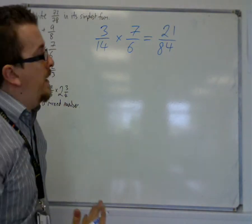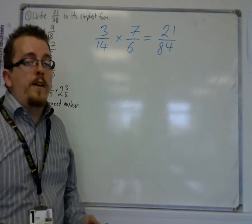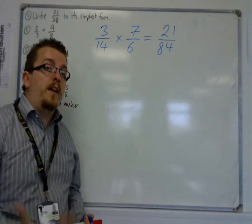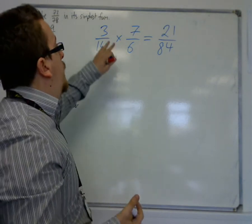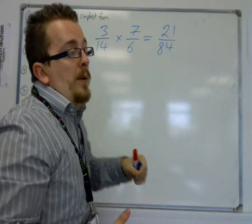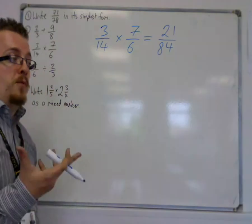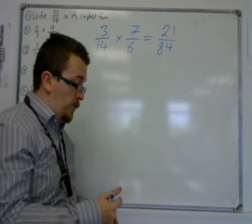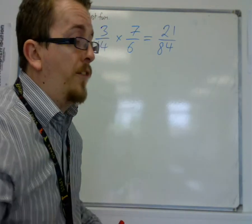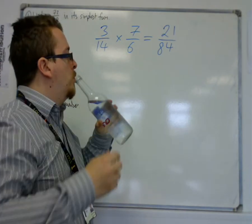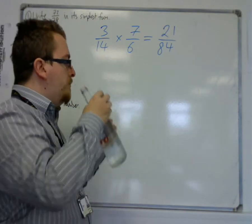Now, in this, it works in very much the way that you would like it to work. That it would just be 3 times 7, 14 times 6. That's what makes multiplying fractions so straightforward. Because it works in the way you'd like it to.